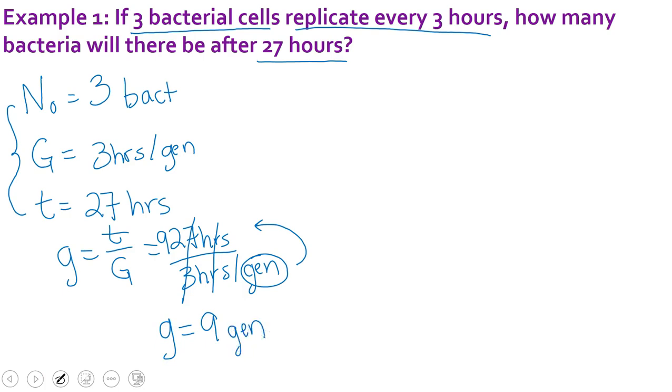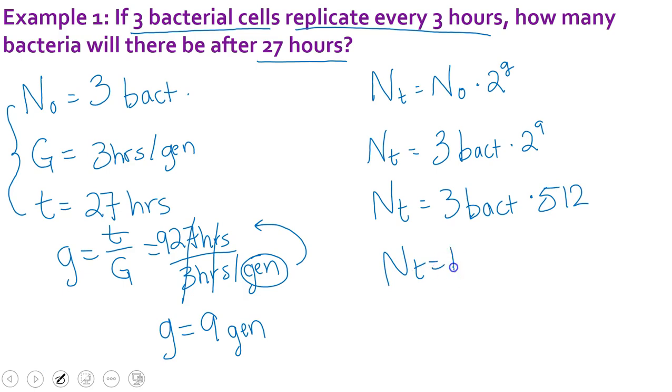Now we can turn to our big equation. As a reminder, our big equation is N sub t equals N sub zero times two to the g power. So N sub t equals three bacteria times two to the ninth. Now you can use your calculator to figure out that two to the ninth equals 512. And that three times 512 equals 1536. Now since we carried our units through, we know that we are ending with 1536 bacteria. So take a moment to get that in your notes. Once that's done, move on to the next practice problem.